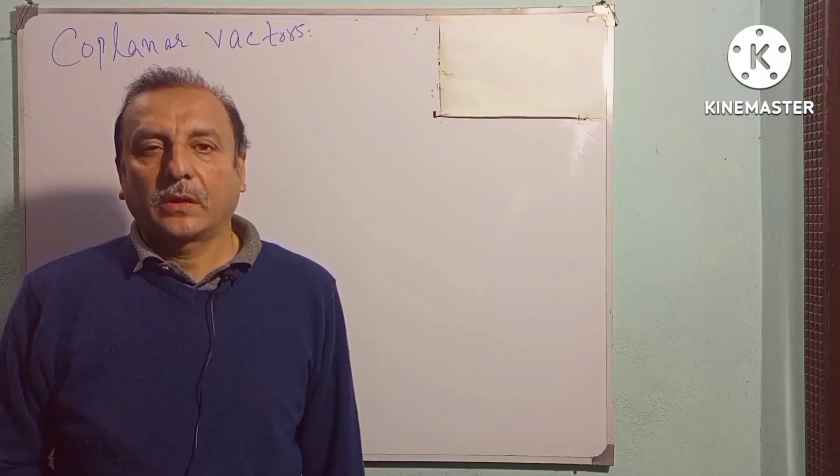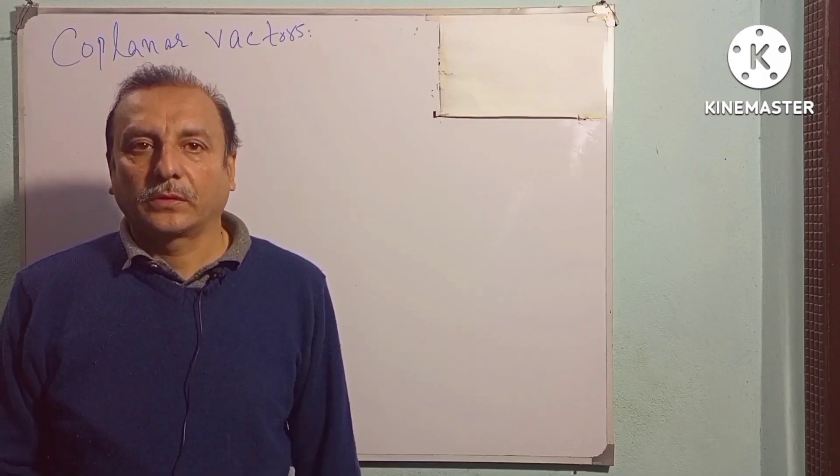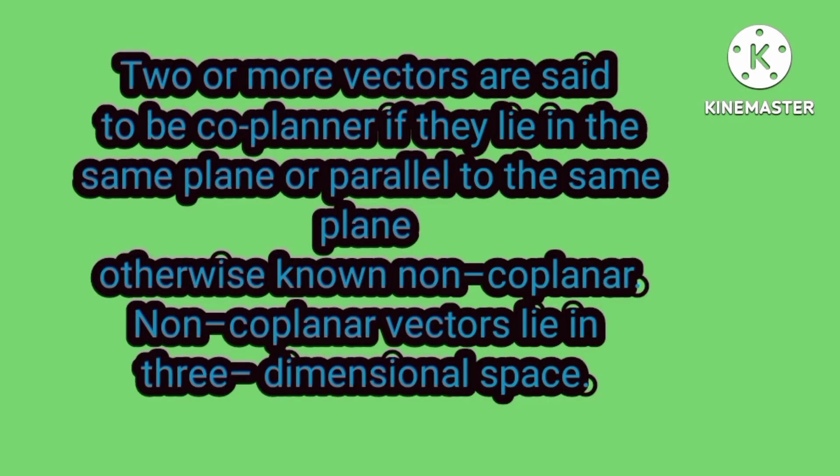What are coplanar vectors? Two or more vectors are said to be coplanar if they lie in the same plane or parallel to the same plane, otherwise non-coplanar.